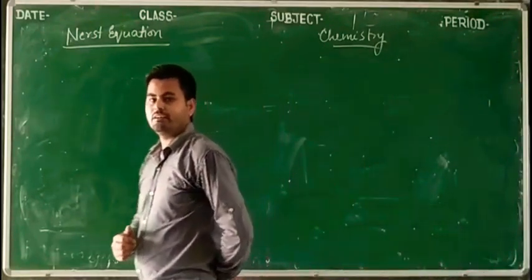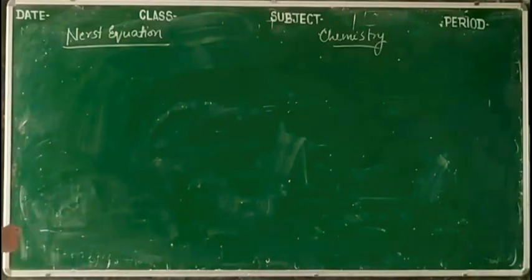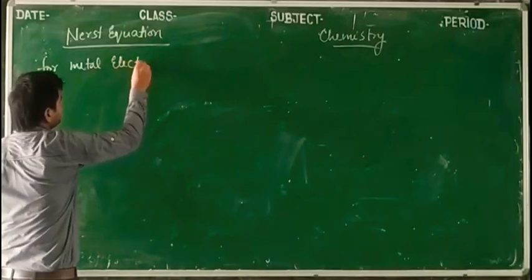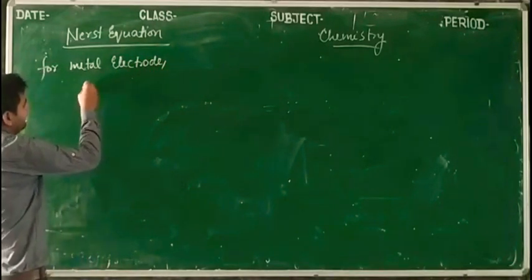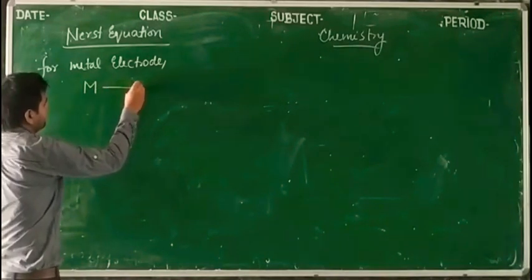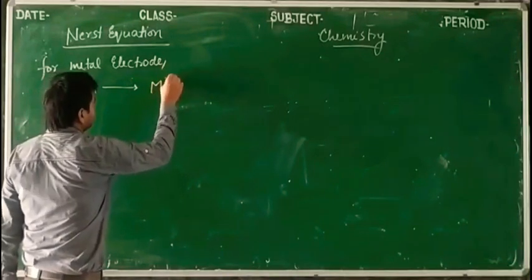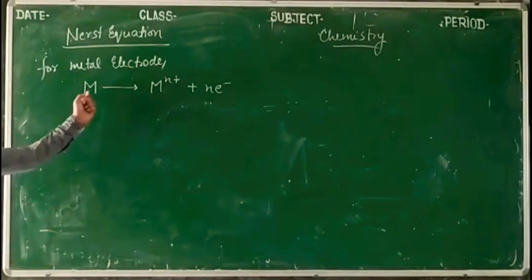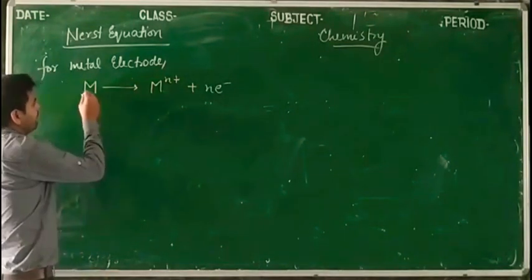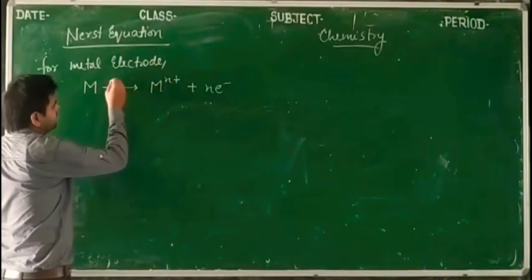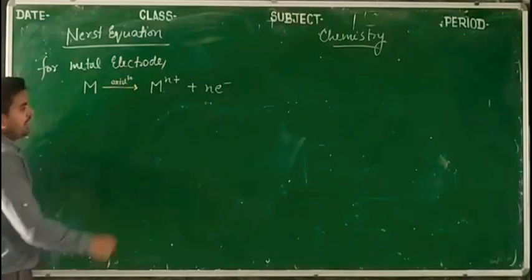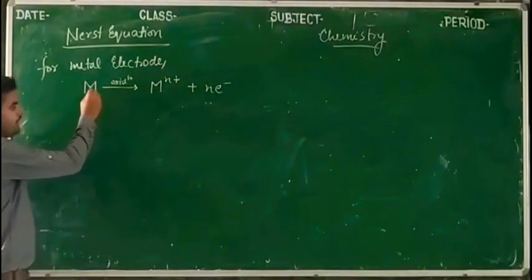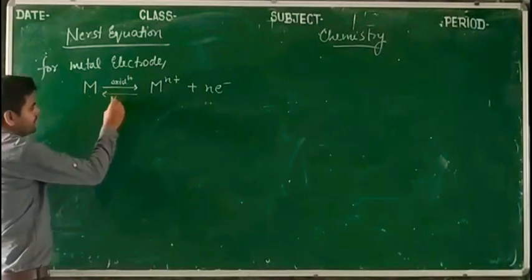First we will discuss two electrodes. The first electrode is the metal electrode. A metal electrode can be represented as M → M^(n+) + n electrons. In the forward direction, metal M is oxidized into M^(n+). In the reverse process, M^(n+) accepts n electrons and forms metal M — that is reduction.